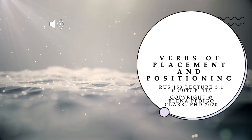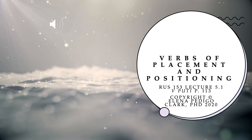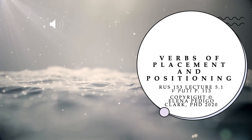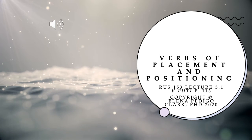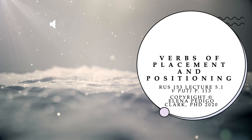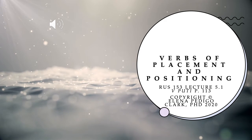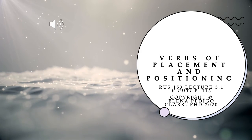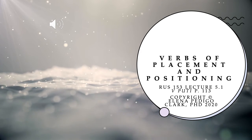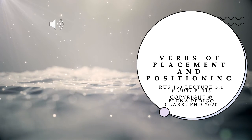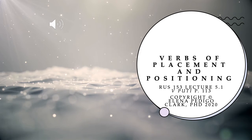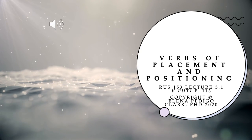Hey everyone, it's Professor Clark, and in this lecture we're going to go over verbs of placement and positioning. This is a list of verbs at the top of page 113 in your textbook. These are verbs that are basically the equivalent of 'to be located in a certain position' or 'to put.' Russian is more precise about its verbs of placement and positioning, just as it's more precise with its verbs of motion. There's no equivalent of just 'to put' — you have to indicate what position you put something in and what position it is in when discussing location.